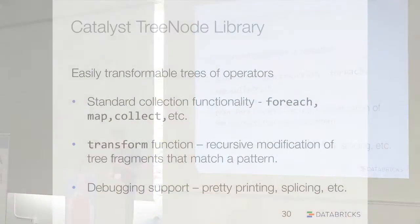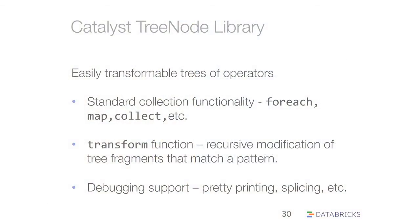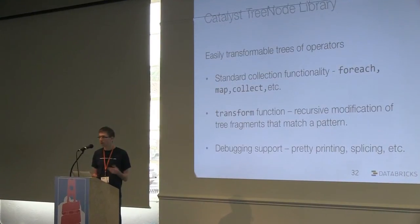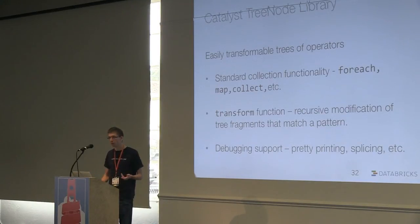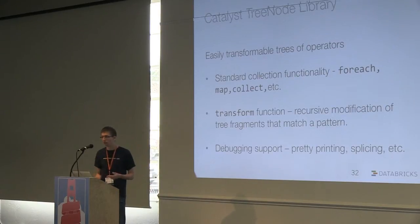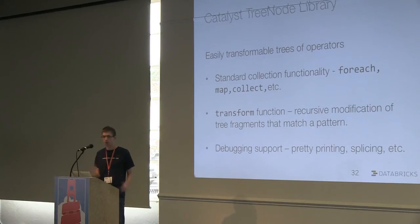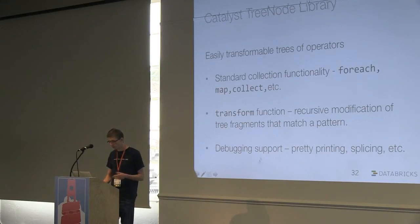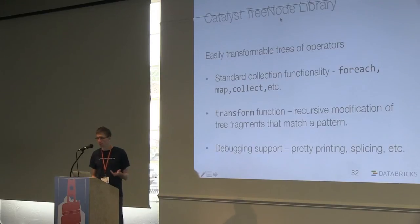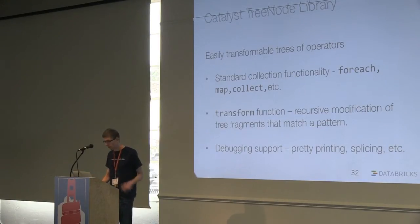In Catalyst, the execution engine in Spark, we do all this stuff using Scala — using pattern matching and functional programming. We get to use the full Scala language in specifying rules and transforming execution plans. The way it works is a tree node library where operators in the logical and physical plans form trees you can hook together. On these trees, we have standard collection functionality so you can run functions on them to inspect the tree. We have a transform function that lets us apply a rule and modify the whole tree. These tree nodes are just Scala case classes, so you can automatically print them out nicely, hook them together, serialize them, and send them over the network.